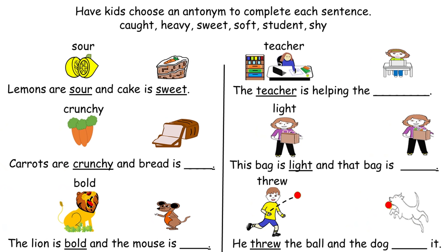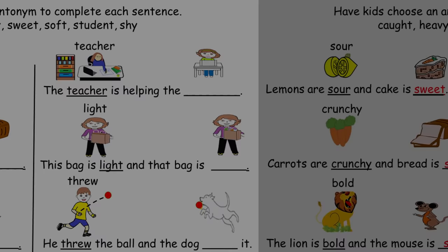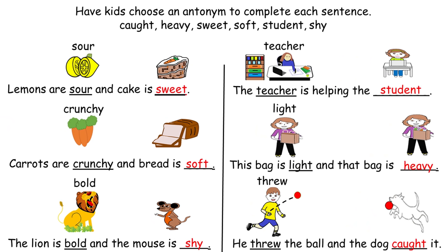In this student practice page, have kids choose an antonym to complete each sentence. These are new words: caught, heavy, sweet, soft, student, and shy — so kids will probably need some help. The first one is done for them: lemons are sour, and cake is sweet. The completed answers in the first column are sweet, soft, and shy, and in the second column: student, heavy, and caught.